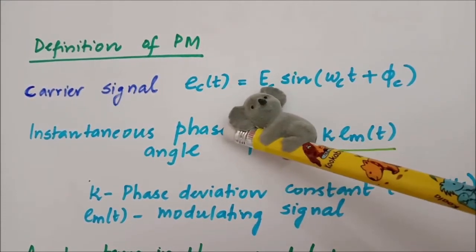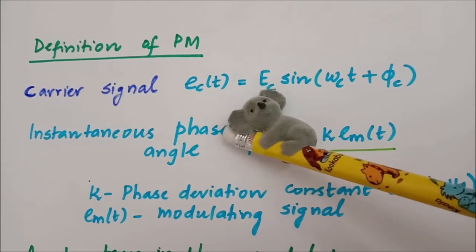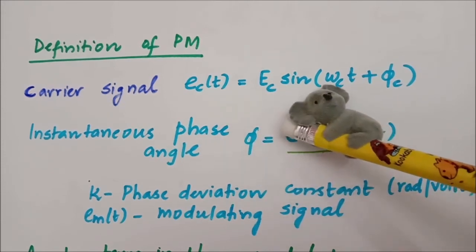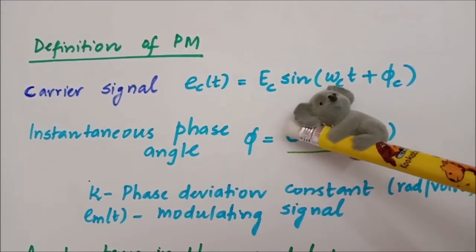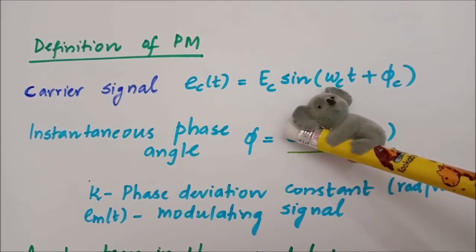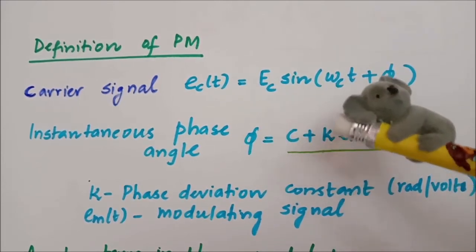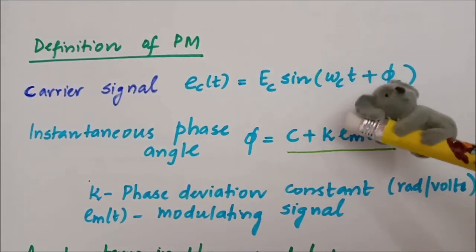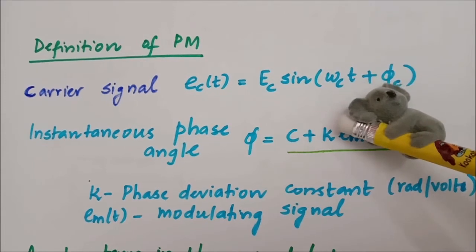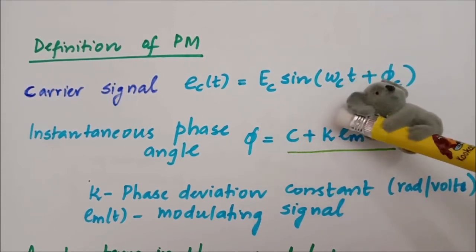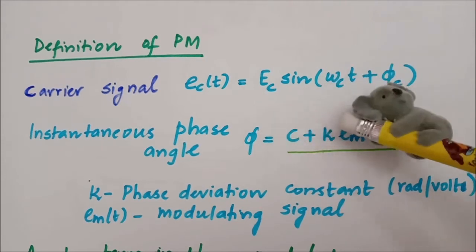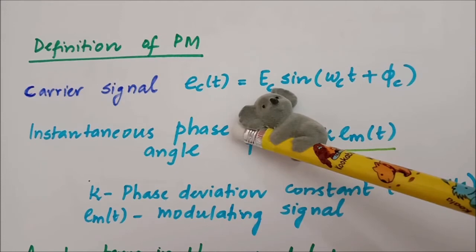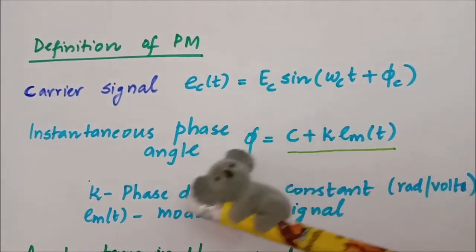In AM modulation we vary the amplitude Ec with respect to the instantaneous amplitude of the modulating signal. In frequency modulation we vary the frequency ωc with respect to the instantaneous amplitude of the modulating signal. In phase modulation, we vary the phase with respect to the instantaneous amplitude of the modulating signal, while both the frequency and the amplitude are maintained constant.